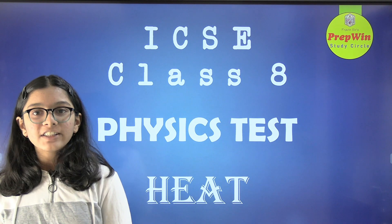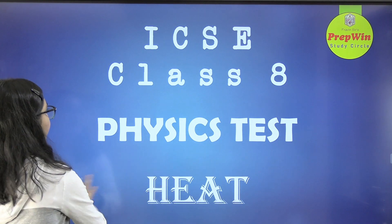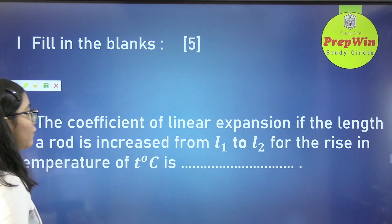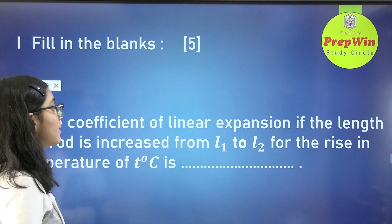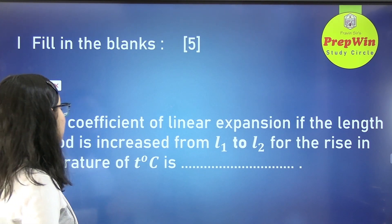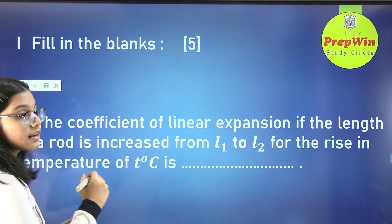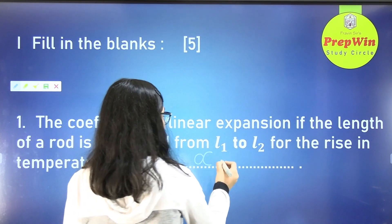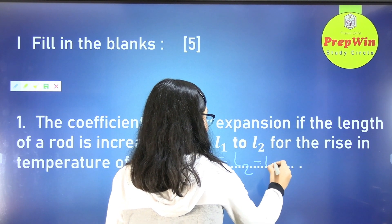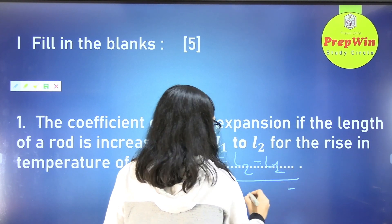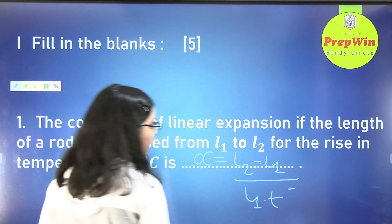So now we will check our answers. The first question: the coefficient of linear expansion, if the length of a rod is increased from L1 to L2 for a rise in temperature of T degrees Celsius, is dash. The value of alpha will be L2 minus L1, upon L1 into the original temperature.